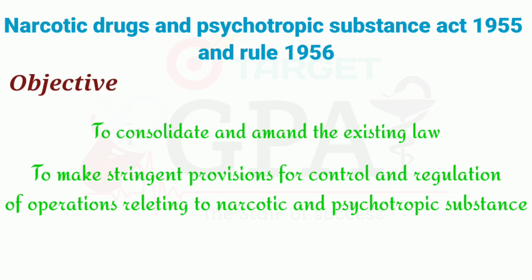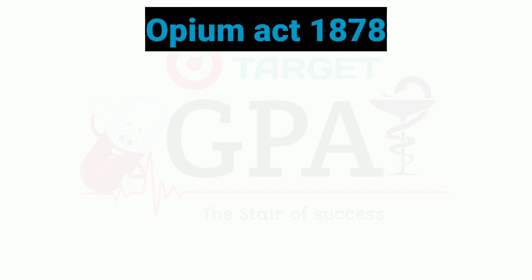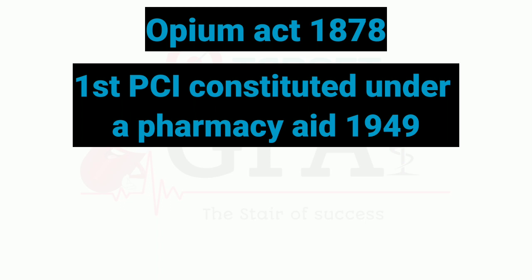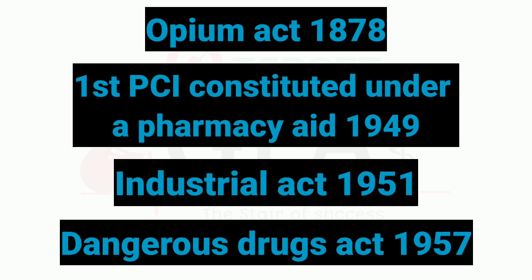Friends, these were some important acts important for GPAT and other competitive exams. Some additional acts asked briefly: the Opium Act first came in 1878; the first Pharmacy Council of India (PCI) was constituted under the Pharmacy Act in 1949; the Industrial Act came in 1951; and the Dangerous Drugs Act came in 1957. In this video we have covered dates, objectives and other important acts.